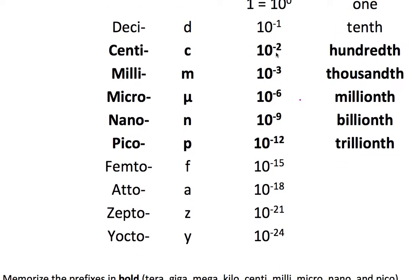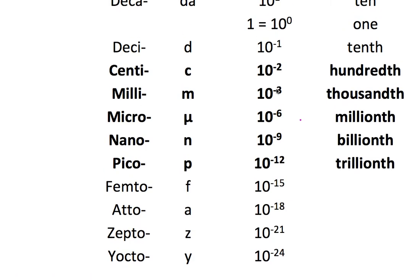And then centi, milli, micro, etc., just start learning that they're negative 2, 10 to the negative 3, 10 to the negative 6. Just start learning those numbers. And then this is what we call it as well. And you'll also want to be familiar with the decimal format, 0.1, 0.01, 0.001. Sometimes we use that.